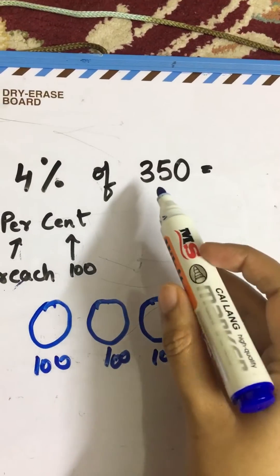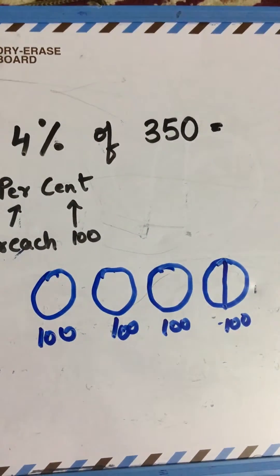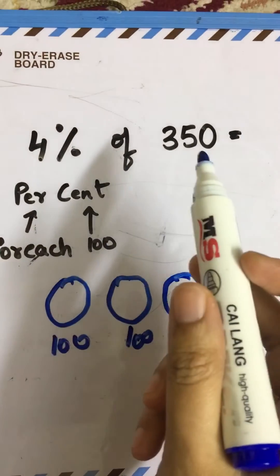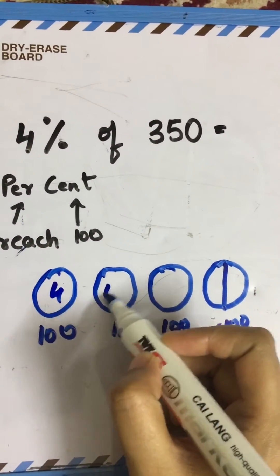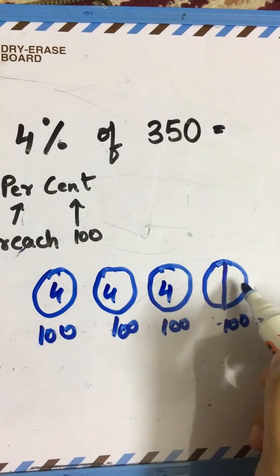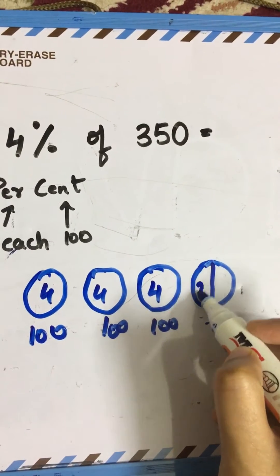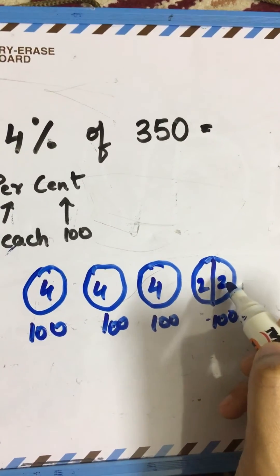How many fours are there in each hundred? There are four, four, four, and here it is two and two which makes four. But we want only the half part, only 50.